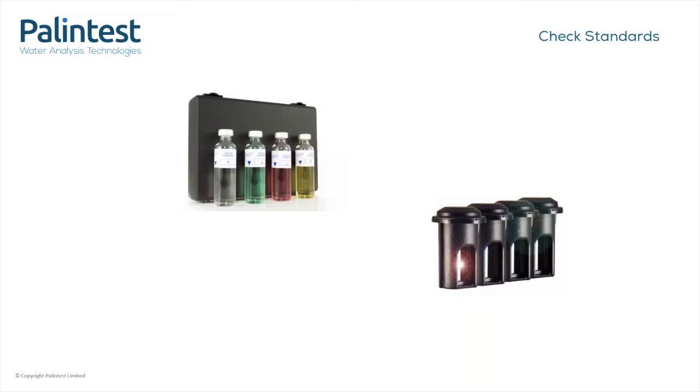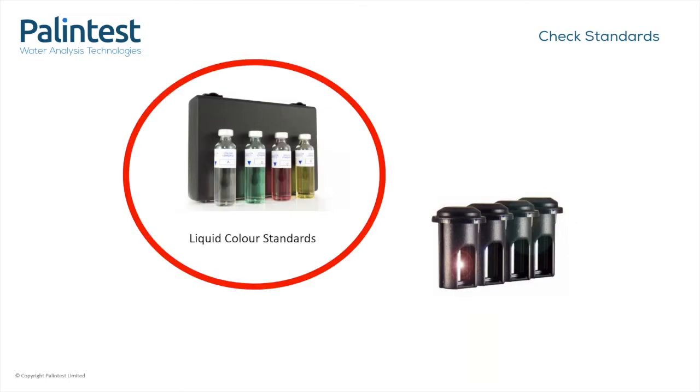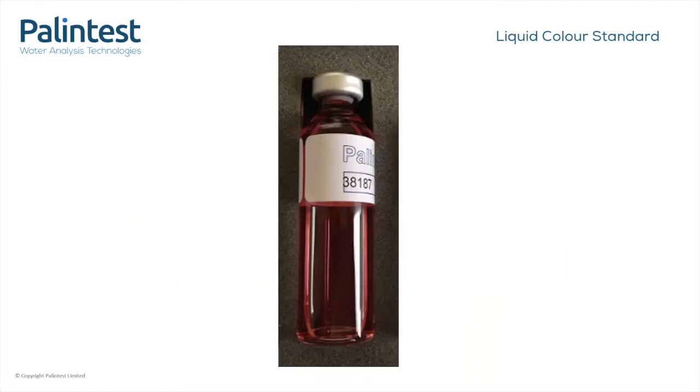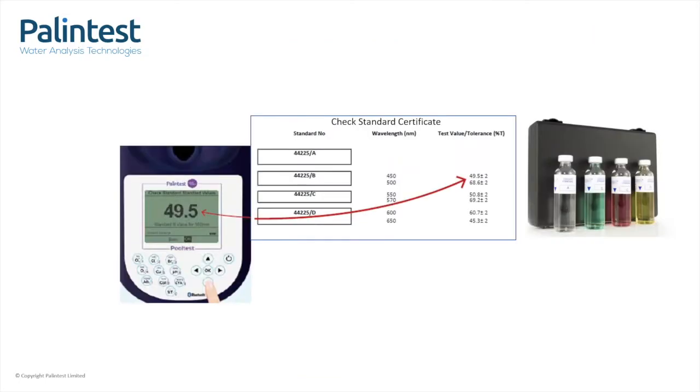Now, we supply two types of check standard. And first, I'm going to talk about liquid colour standards. These are small sealed vials of coloured liquid. The liquid has been formulated so that for any particular wavelength of light, it has a known percentage transmission value, referred to as the percent T.